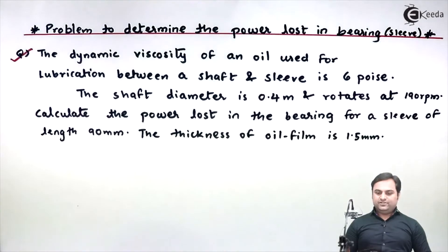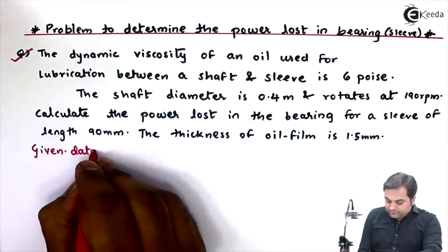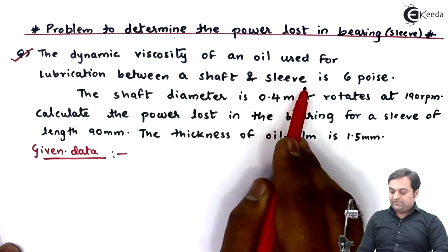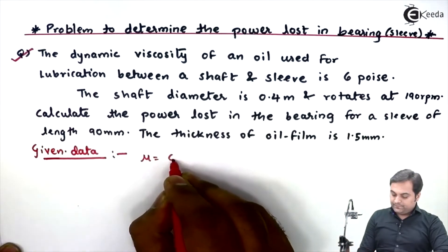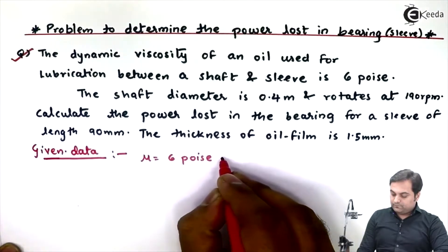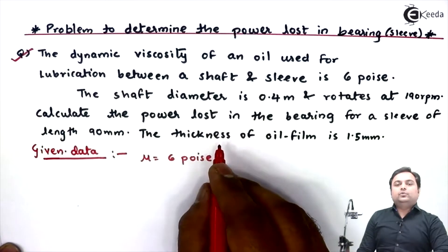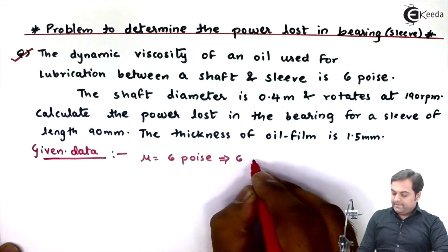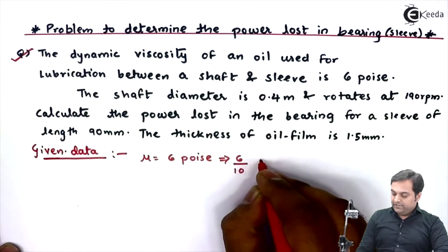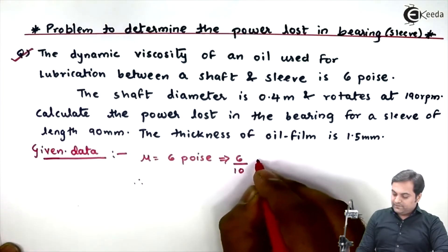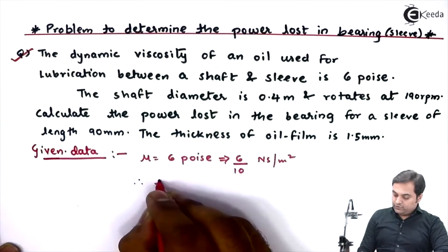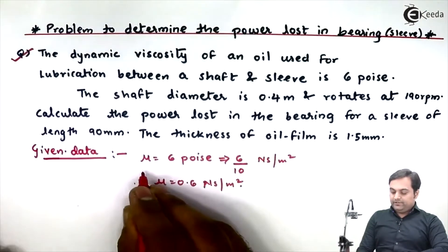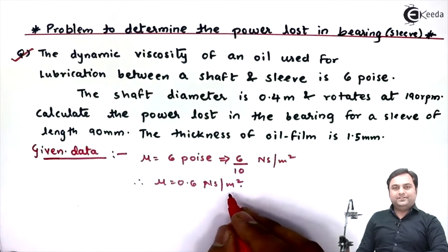Let us start writing the data. The dynamic viscosity of the oil is 6 poise, so mu is given. It is in terms of poise, so I have to convert it into Newton second per meter square. For that I will divide it by 10, which gives mu = 0.6 Newton second per meter square. I have converted dynamic viscosity from poise to Newton second per meter square.